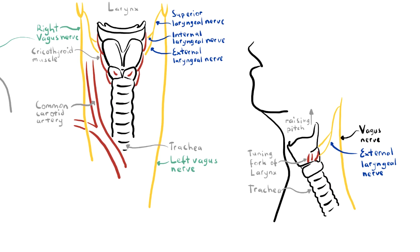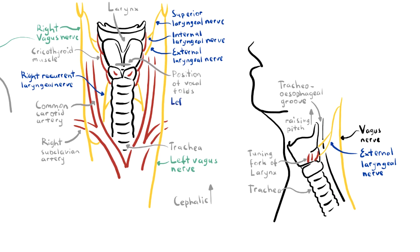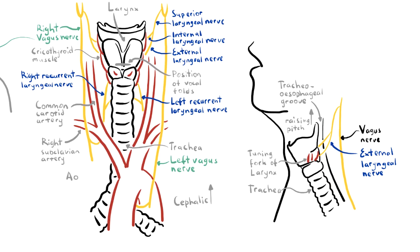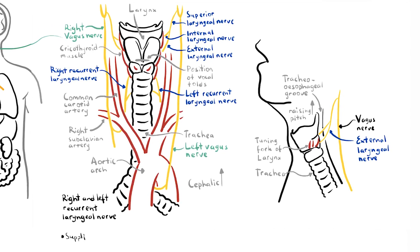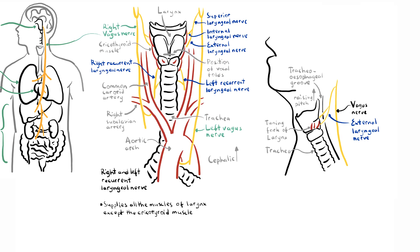The internal laryngeal nerve is responsible for sensation of the larynx above the vocal cords. The right vagus nerve gives off another branch called the right recurrent laryngeal nerve, which loops under to run in the tracheoesophageal groove. Similarly, the left vagus nerve gives off the left recurrent laryngeal nerve, which loops under the aortic arch turning back in a cephalic direction. The right and left recurrent laryngeal nerves supply all muscles of the larynx except the cricothyroid muscle, which is supplied by the external branch of the superior laryngeal nerve.